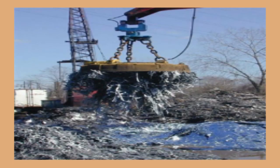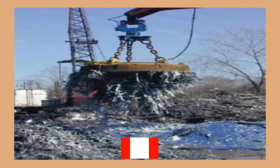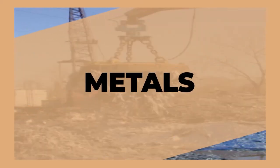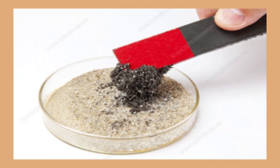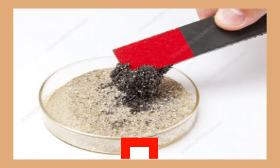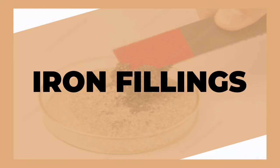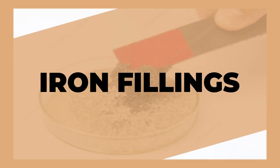What about picture number two? Metals are certainly separated from the non-magnetic materials in the dump site. What are the two materials separated by magnet in the third picture? Iron fillings — good job! Iron fillings are separated from the brown sugar using magnet.